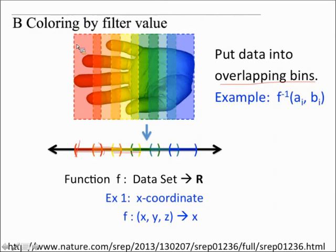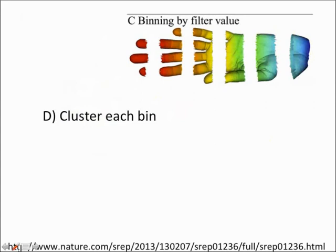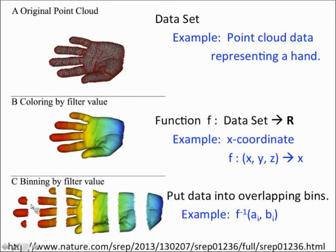This binning breaks our data up into overlapping bins. Note that these bins do overlap — the pointing finger region, for example, is part of more than one bin. They do overlap.